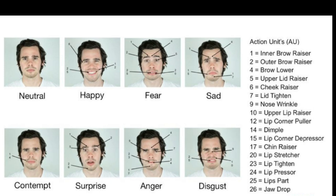By going through each of these action units — the inner brow raising, the outer brow raising, the brow lowering, the upper lid raising, the cheek raising, the lid tightening, the nose wrinkling (which often happens when someone is disgusted), the upper lip raising, the lip corner pulling, the dimple coming into play (sometimes when someone is contemptuous), the lip corner depressing, the chin raising, the lip stretching or tightening, the lip pressing, the lip parting, and the jaw dropping — these are everyday things you see in yourself and others. Try to make an expression and you'll probably see a lot of these align with what Ekman's Facial Action Coding System describes.